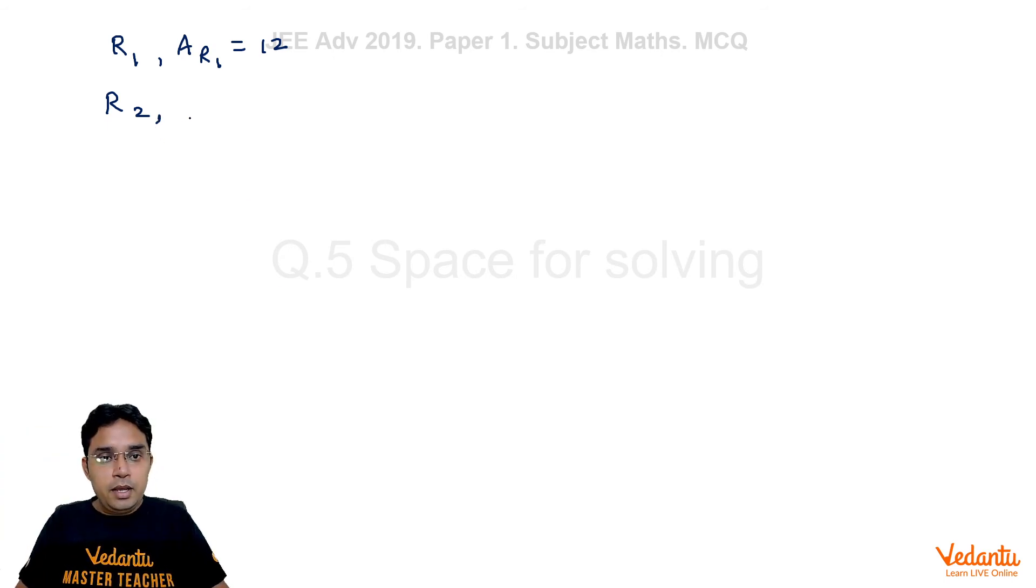So here area of this second rectangle should become 12/(√2)² because both sides are becoming 1/√2 times, 1/√2 times. So area will become 1/2 times. So this is 6 here. Similarly for R3 you can calculate, ar3 will be 6/2, that is 3, and so on.